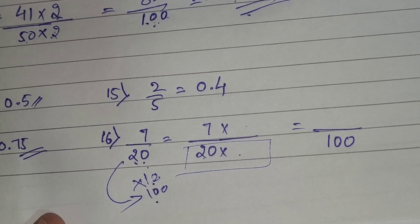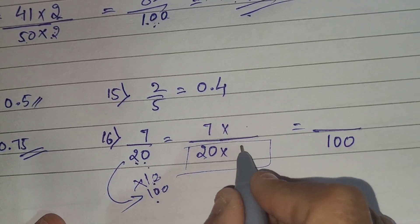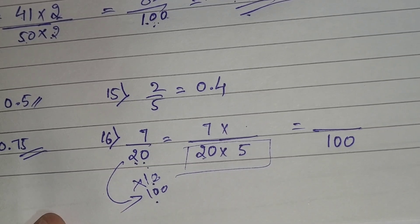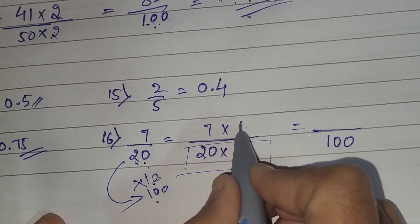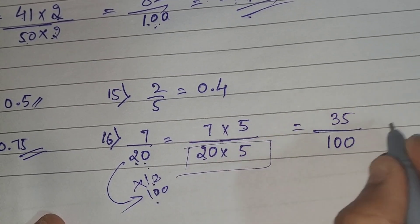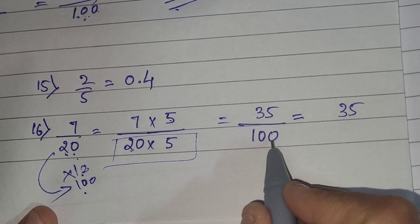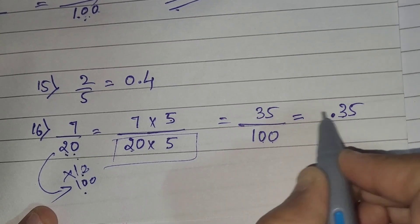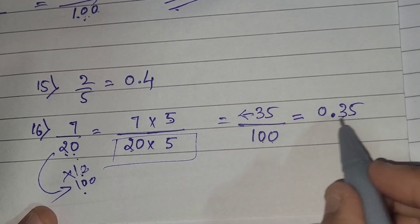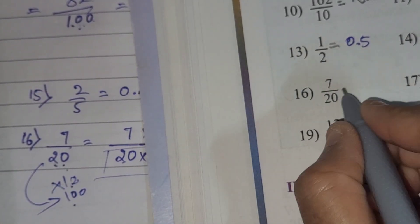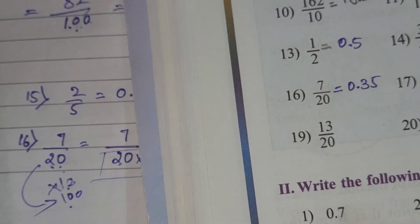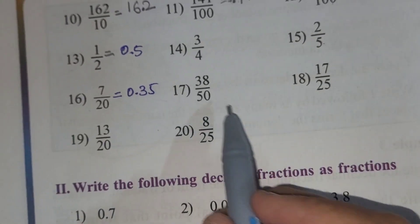For 7 by 20, we multiply both numerator and denominator by 5, because 20 × 5 = 100. So 7 × 5 = 35, giving us 35 by 100. Now convert to decimal: two zeros in the denominator, after two digits — no leading number, put 0 — so 0.35 is the answer. The 16th answer is 0.35.